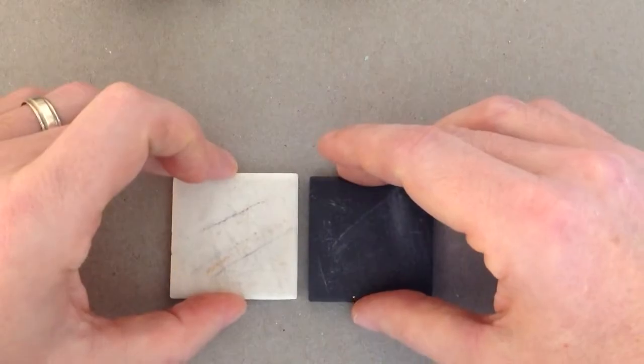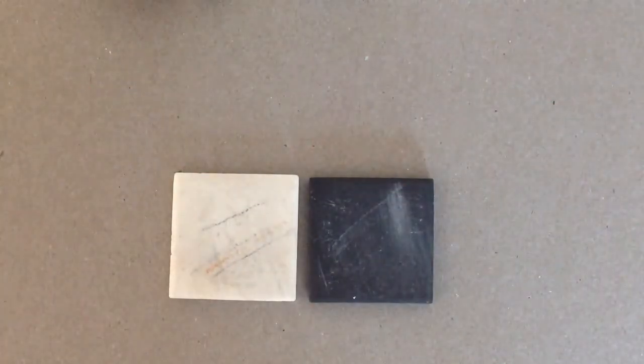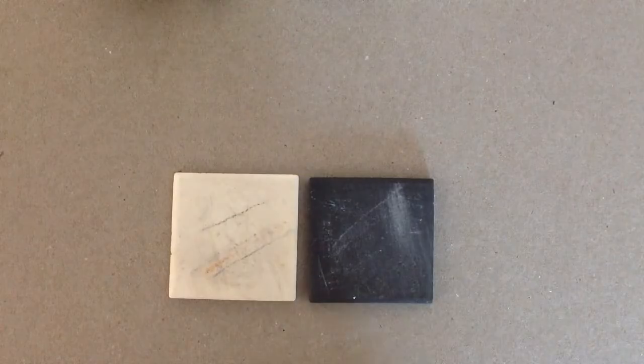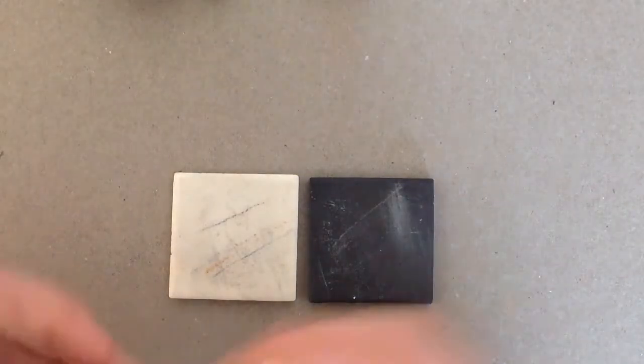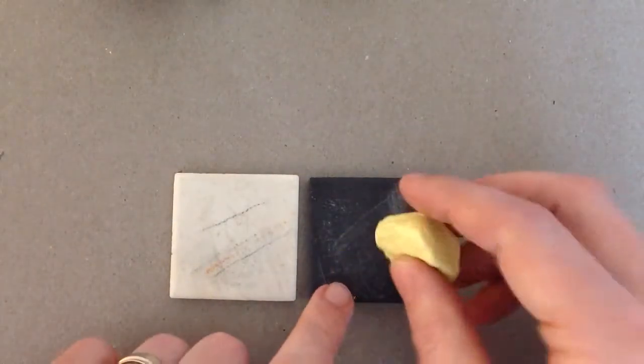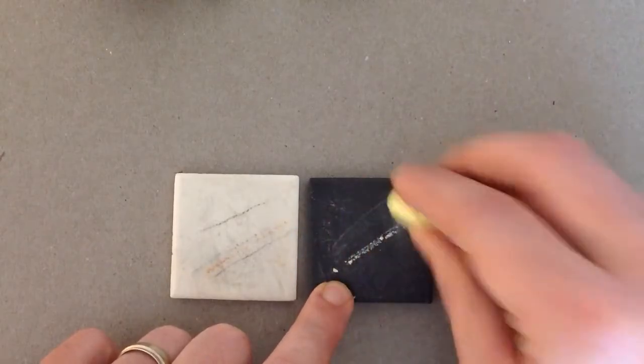The second characteristic is a characteristic called streak. And this is going to be the powdered version of the mineral. What we do here is we take a mineral and we basically get the powdered version by rubbing it along the tile.